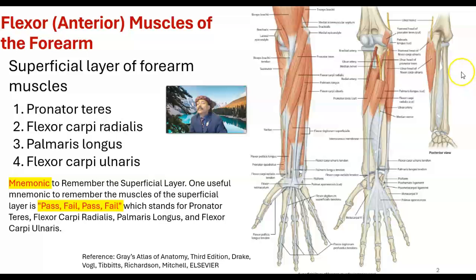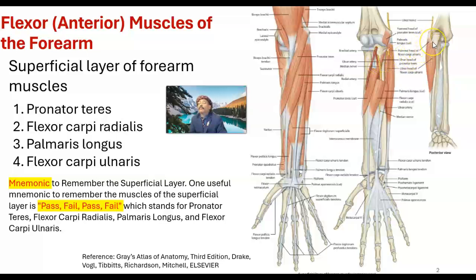The flexor carpi ulnaris has two heads. Between those two heads, we find the ulnar nerve. So to summarize: the median nerve passes between the two heads of the pronator teres, and the ulnar nerve passes between the two heads of the flexor carpi ulnaris.